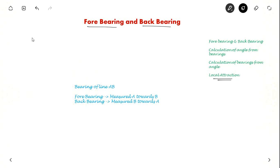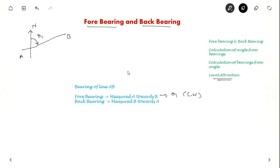First, what is bearing of a line? Bearing of a line is an angle with respect to the reference meridian. Suppose we have a survey line AB and this is the reference meridian pointing towards north. So this is the bearing — let us say this is theta 1. When the bearing is measured from A towards B, it is called forebearing. Forebearing here is theta 1 and it is measured clockwise from A to B.